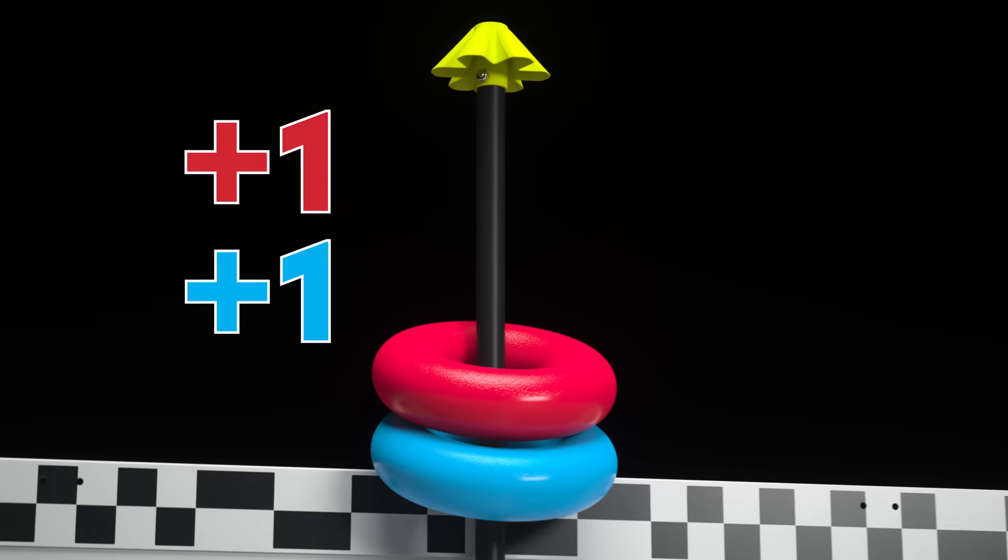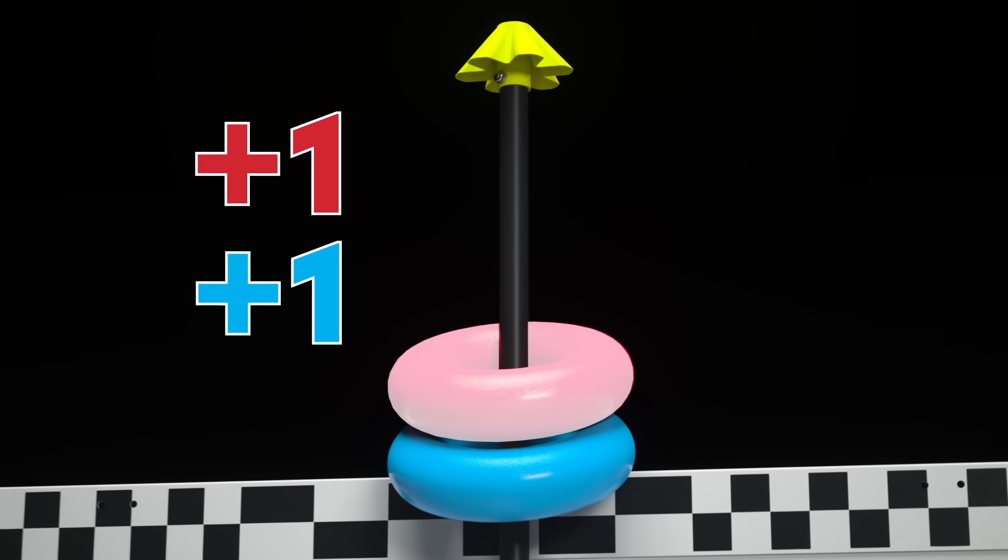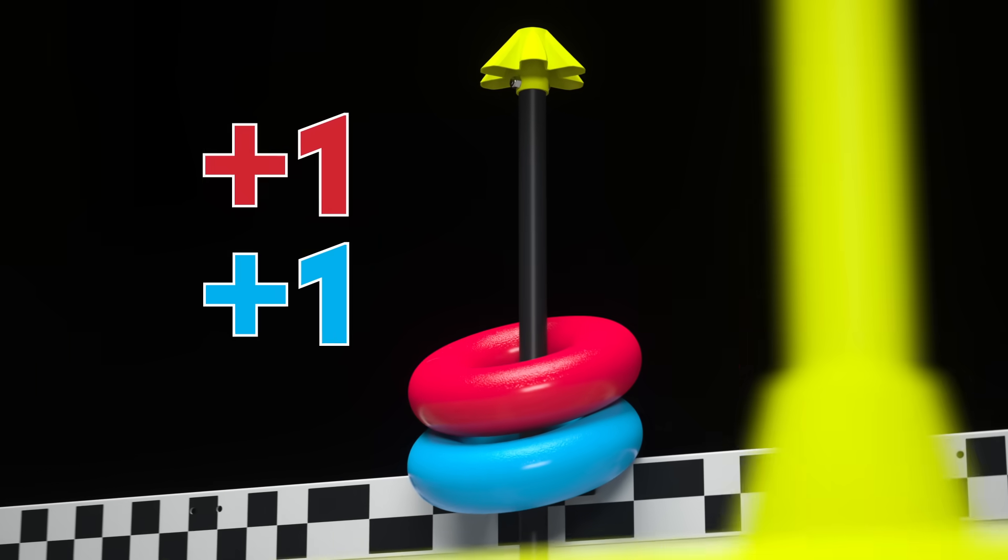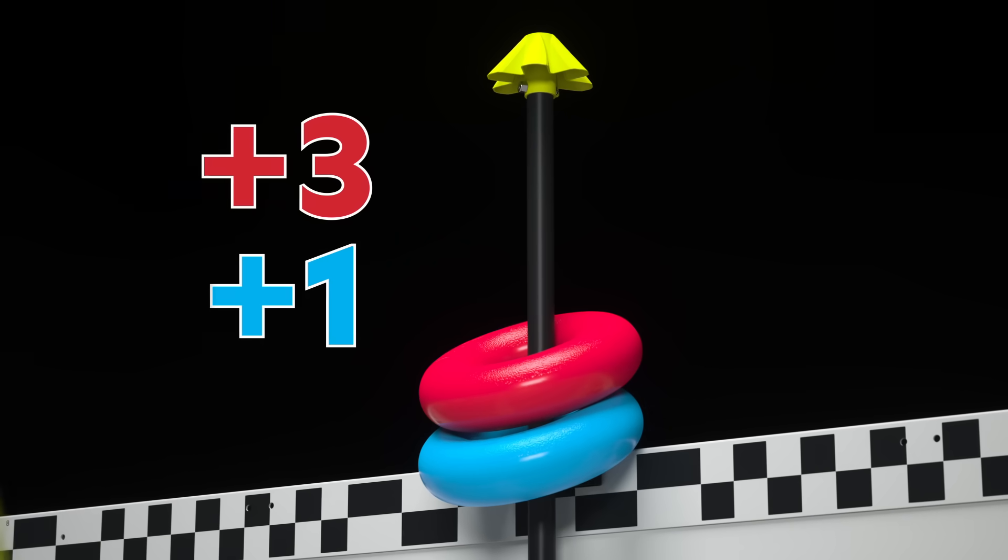Rings that are scored on stakes are worth one point for that ring's alliance. The highest ring on each stake is called the top ring and is worth two additional points.